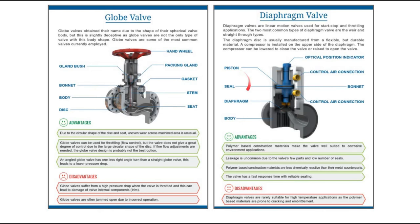Diaphragm valves have several advantages. Polymer-based construction materials make the valve well suited to corrosive environmental applications, and these materials are less chemically reactive than their metal counterparts. Leakage is uncommon due to the valve's few parts and low number of seals. The valve has a fast response time with reliable sealing. Disadvantages: diaphragm valves are rarely suitable for high temperature applications, as the polymer-based materials are prone to cracking and embrittlement at high temperatures. So diaphragm valves are not recommended for high temperature applications.